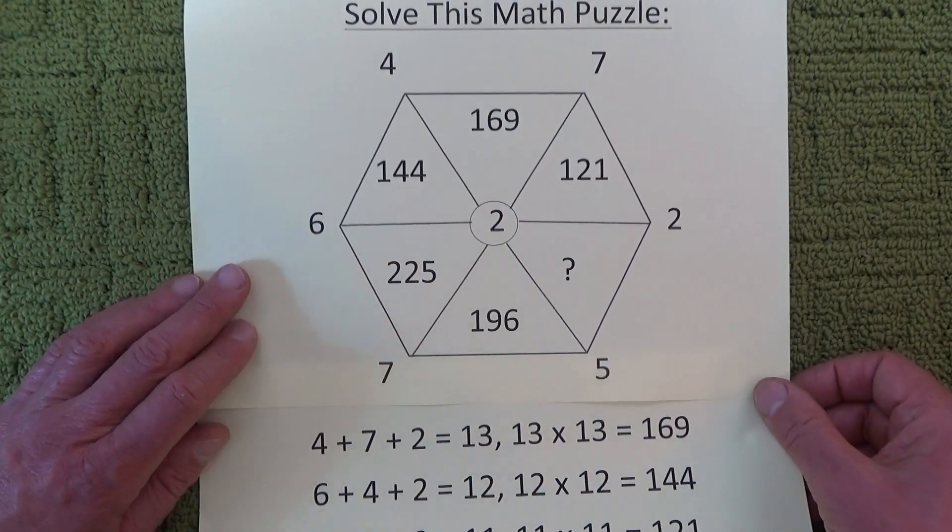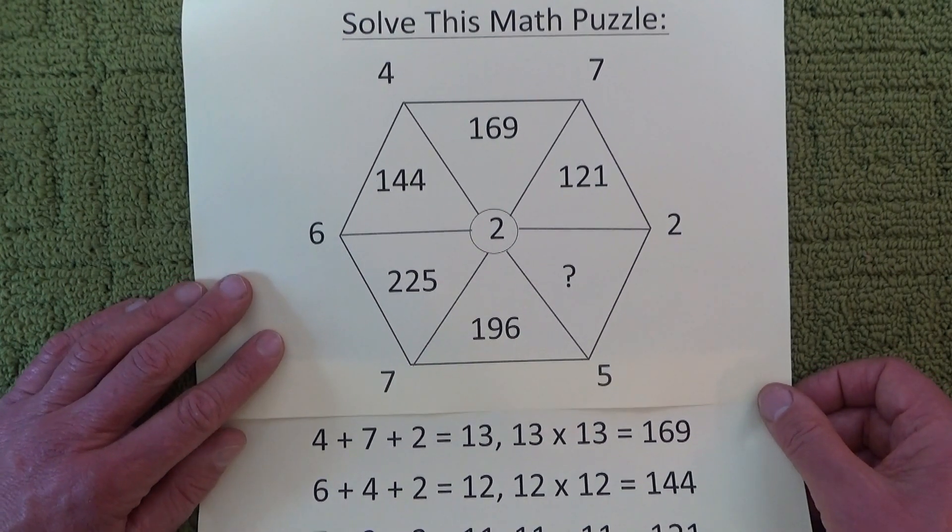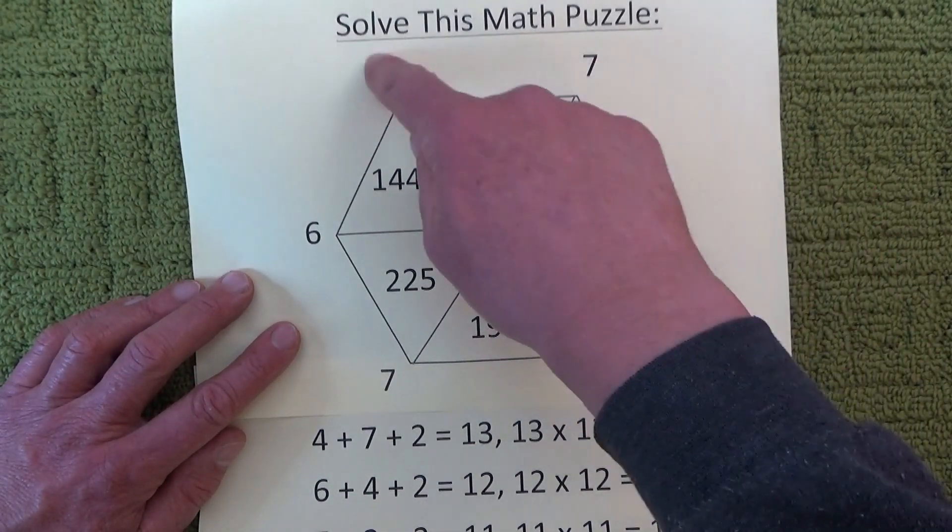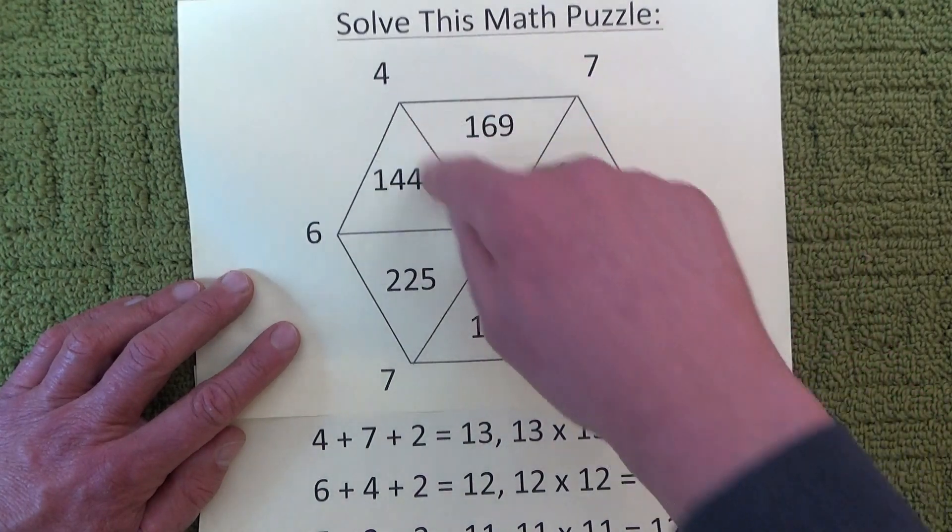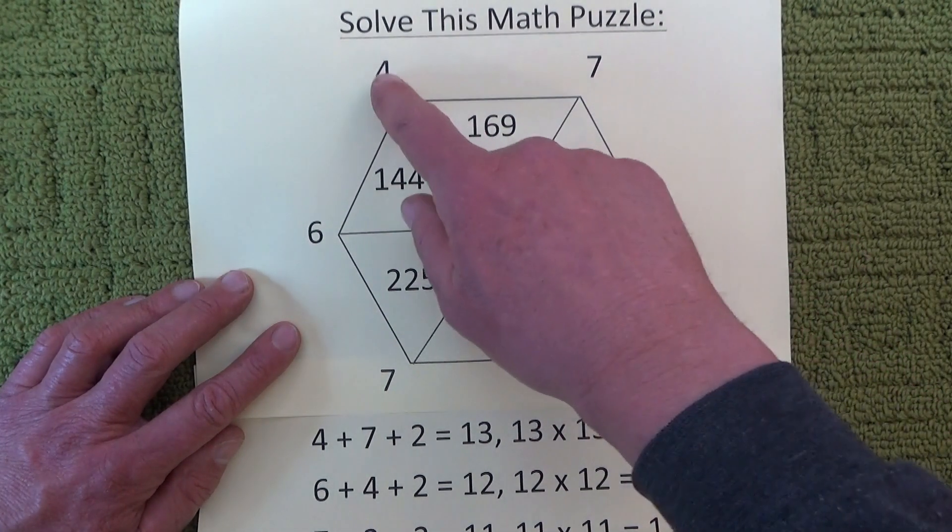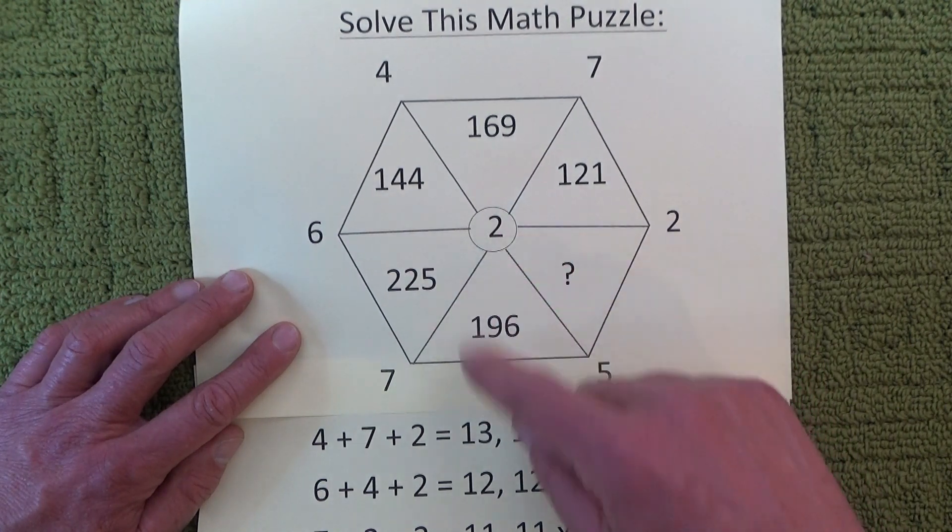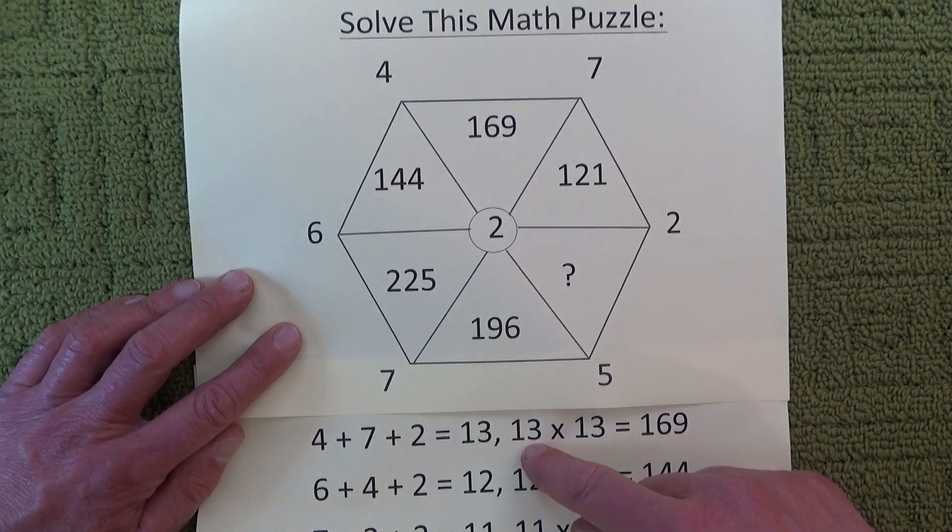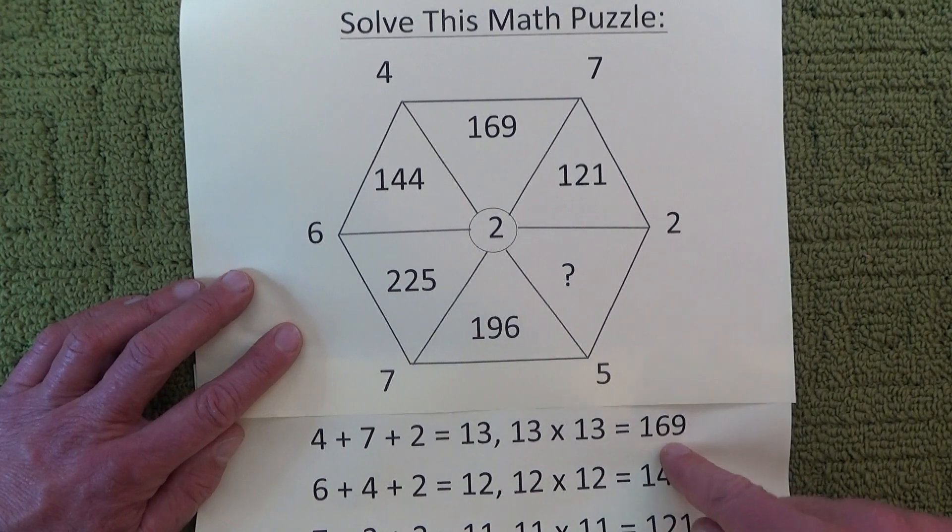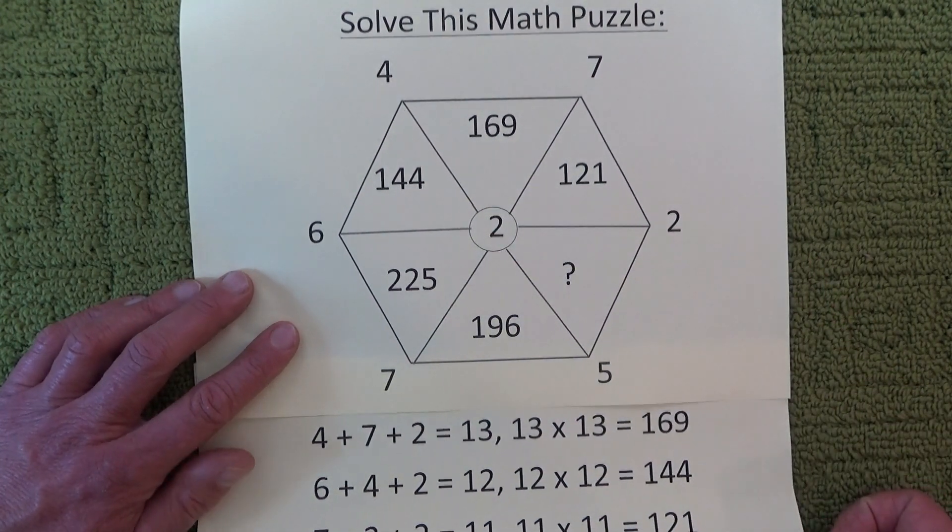The answer is that each of these segments create a triangle and what we have to do is add the 4 plus the 7 plus the 2 which equals 13, and then we square it. We multiply the 13 by the 13 and that equals 169.